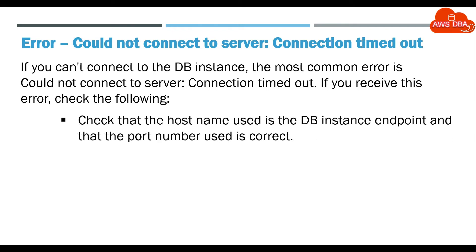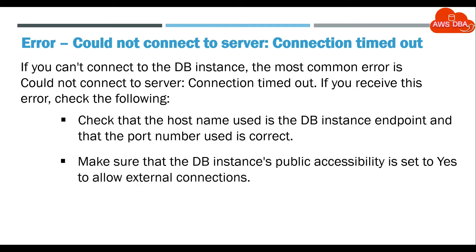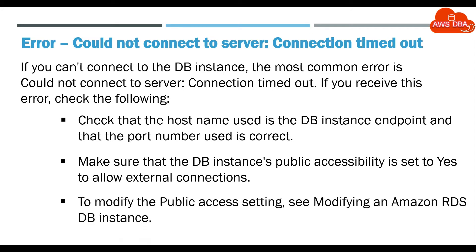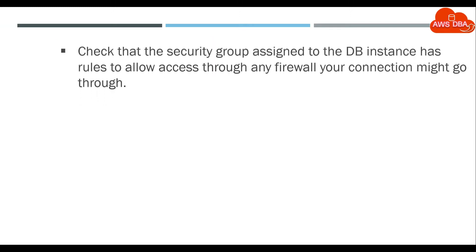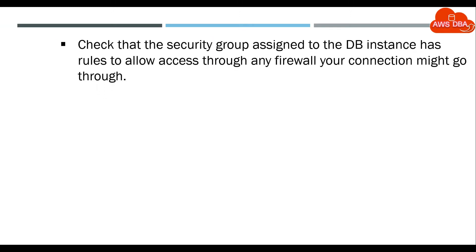Check that the host name used is the DB instance endpoint, and that the port number used is correct. Make sure that the DB instance's public accessibility is set to yes, to allow external connections. To modify the public access setting, see Modifying an Amazon RDS DB instance. Check that the security group assigned to the DB instance has rules to allow access through any firewall your connection might go through.